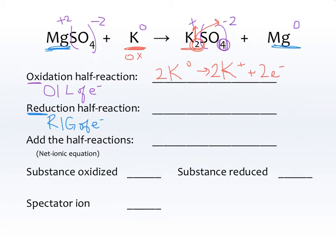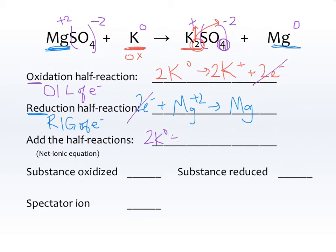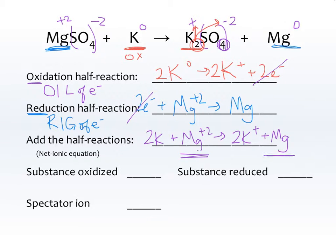For the reduction half reaction, we have Mg²⁺ turning into Mg. Notice that the sulfate is totally left out — it's not really participating in this reaction. I also need two electrons, and those go on the left to balance the charges. Reduction always has electrons on the left. Then we add the half reactions together — the two electrons cancel on each side. What's left over is 2K⁰ plus Mg²⁺ makes 2K⁺ plus Mg⁰. The zeros are optional, but the plus signs are not — Mg²⁺ is a clear aqueous solution while Mg⁰ is a silver-colored metal, so you can't confuse them.